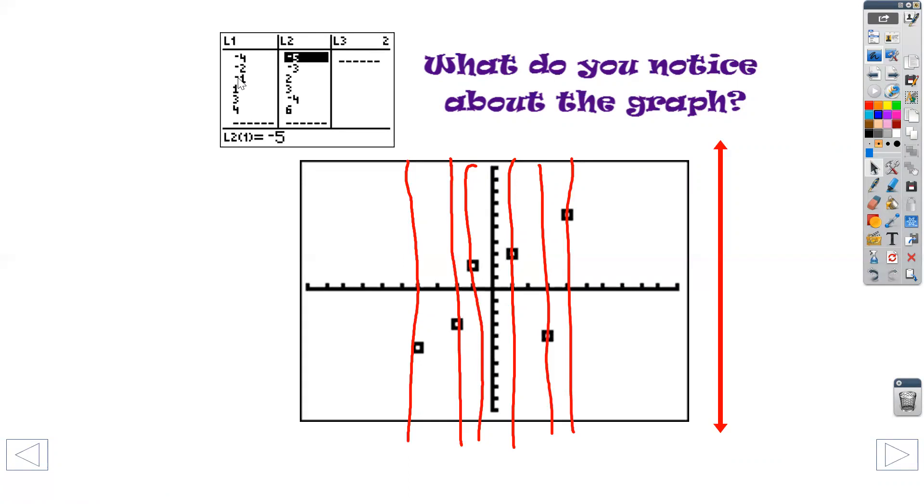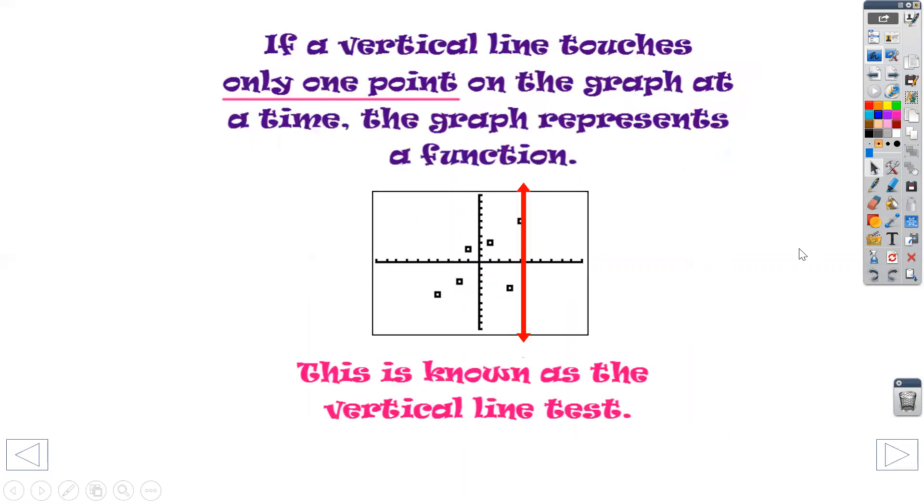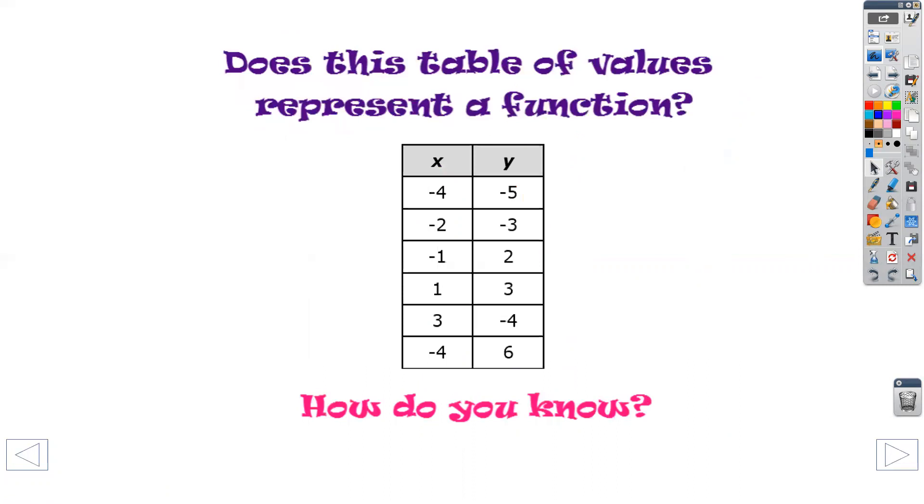And I can see that as well by looking at my L1, which is my X coordinates, and notice that none of my X's ever repeat. So again, called the vertical line test.